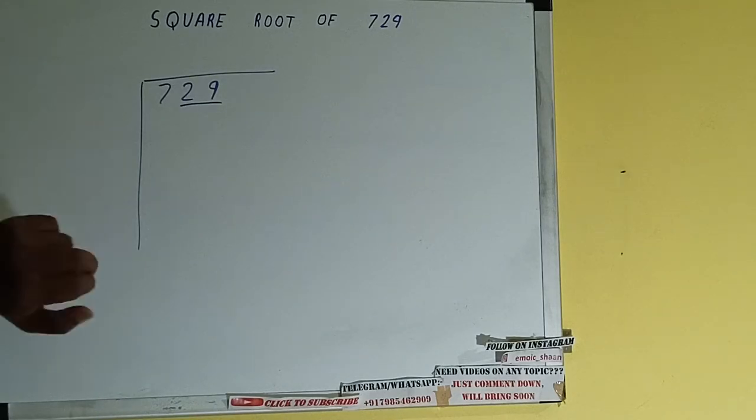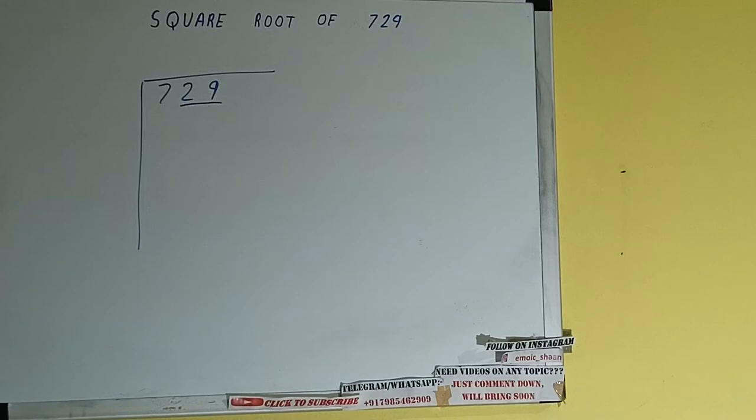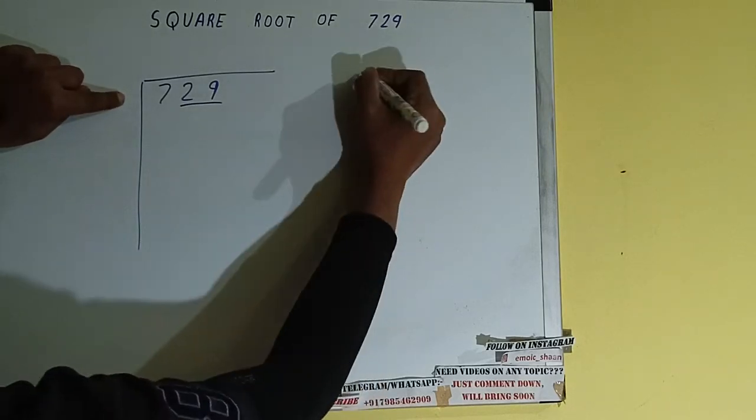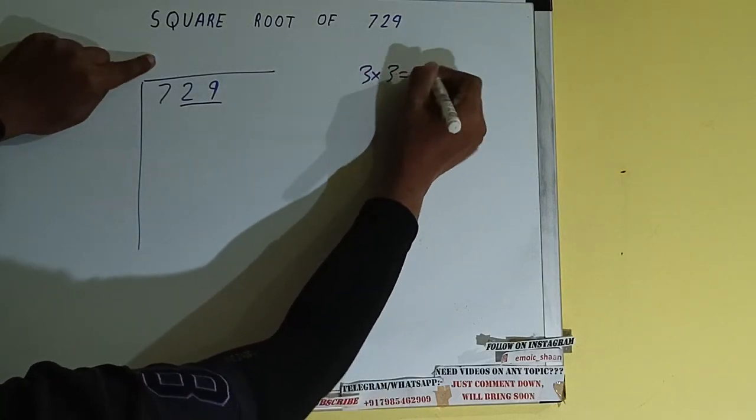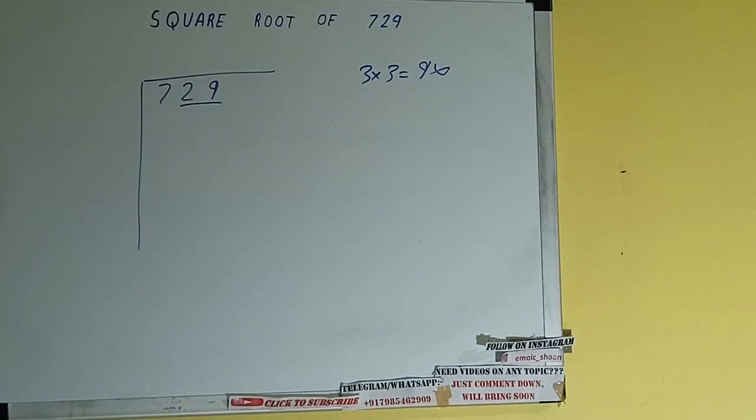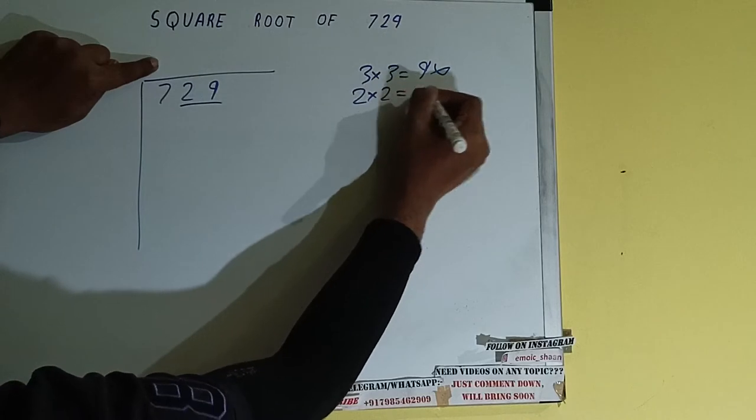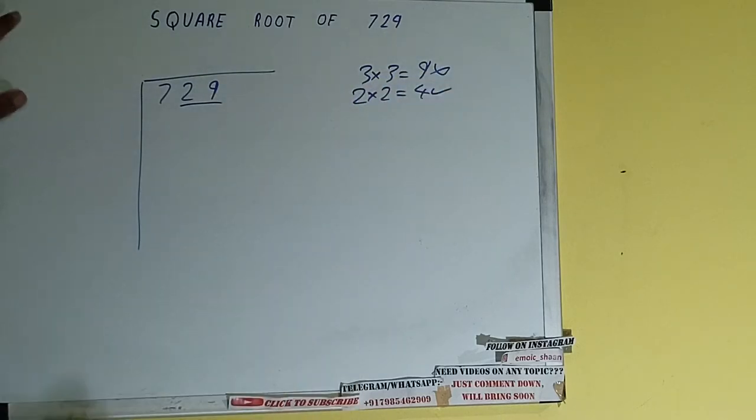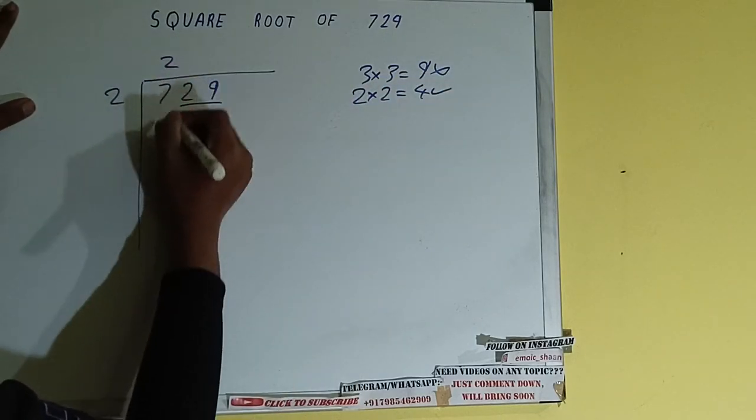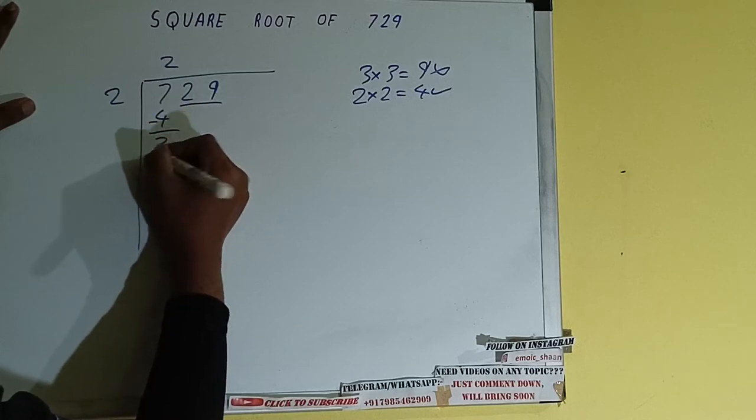The rule is whatever number we write here we have to write here also. So if we write 3 here and 3 here it will be 9 which is greater than 7, so we cannot take it. If we write 2 here and 2 here it will be 4 which is good to take. So 2 here and 2 here, 4 subtract, 3 will be left.